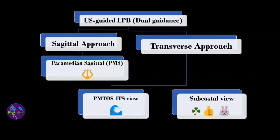In ultrasound guidance, the problem is that the structures are deep and it is difficult to identify the lumbar plexus, so it is recommended to use dual guidance. We have one sagittal approach — the paramedian sagittal approach — and two transverse approaches: the paramedian transverse oblique scan, the inter-transverse space view, and the subcostal view popularly known as the shamrock approach.